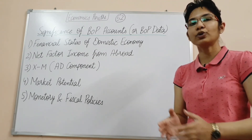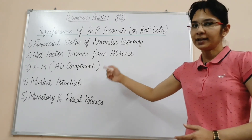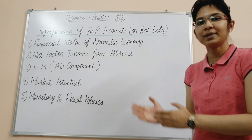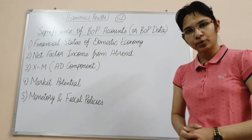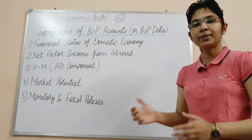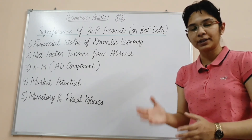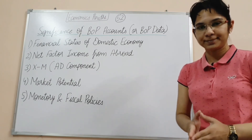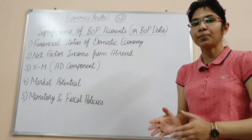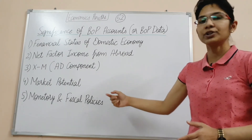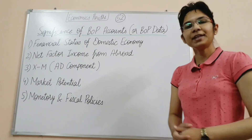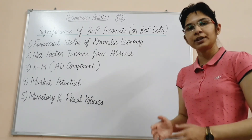Third, look at net exports, that is X minus M — exports minus imports. Net exports are an important component of aggregate demand, and the balance of payment account captures this. Fourth, BOP tells us about market potential. If foreign investment is growing in an economy, it indicates high market potential. If foreign investment is very low, it indicates low market potential.